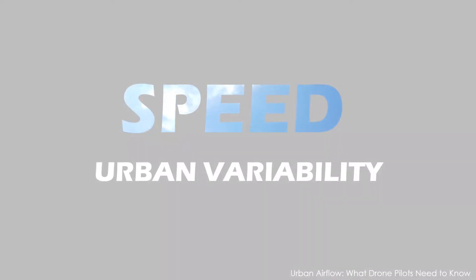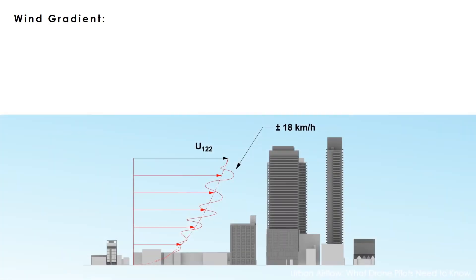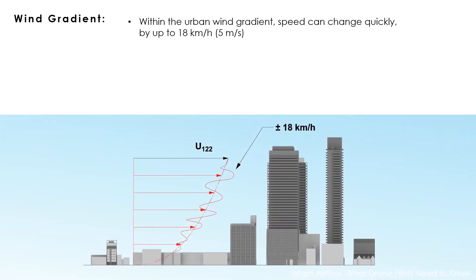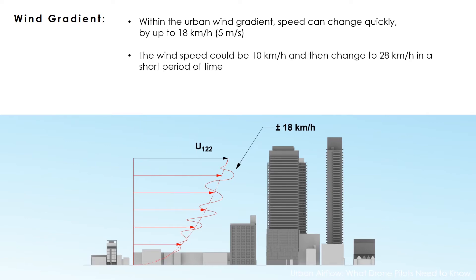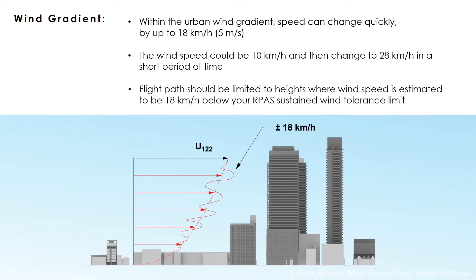Within the urban environment, wind speed is also variable. Within the urban wind gradient, speed can change quickly by up to 18 kilometers per hour. The wind speed could be 10 kilometers per hour and then change to 28 kilometers per hour in a short period of time. So it is wise to limit your flight path to heights where wind speed is estimated to be 18 kilometers per hour below your RPAS sustained wind tolerance limit.